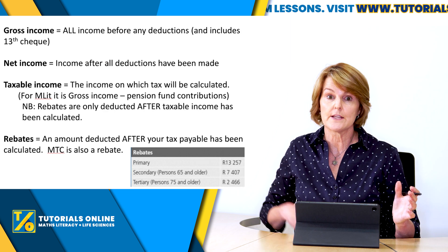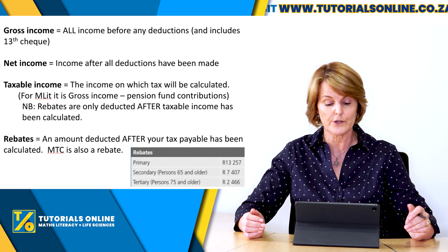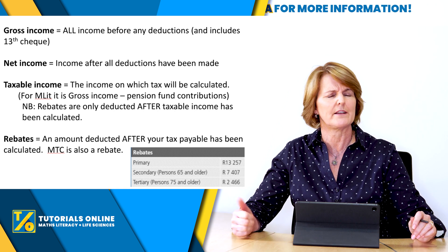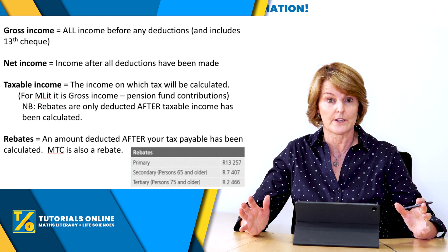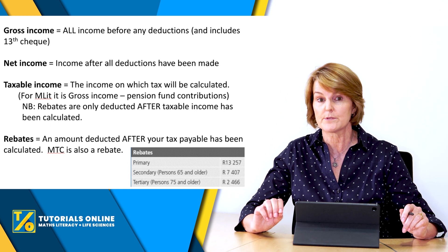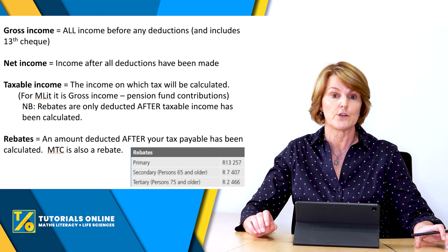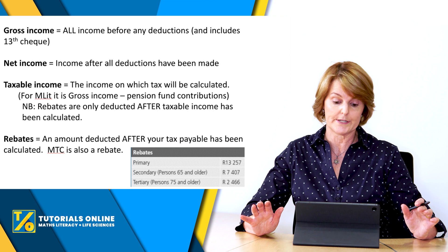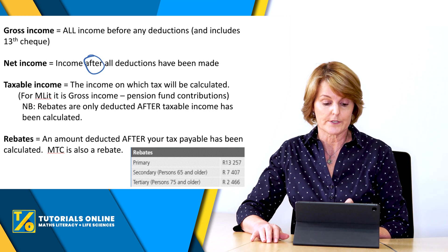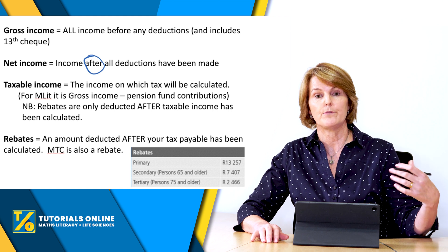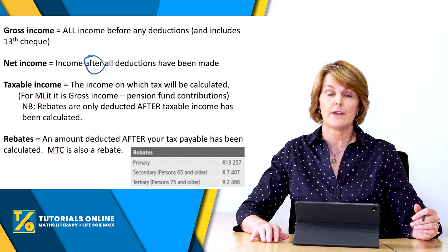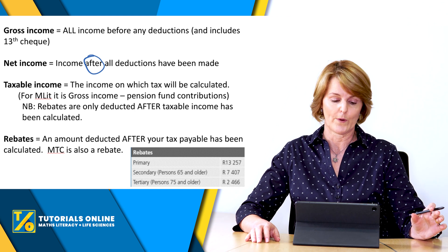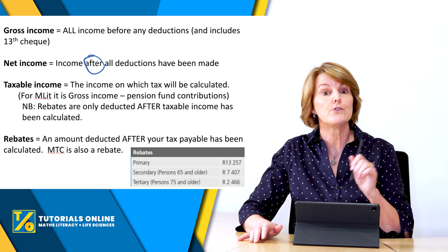You also have gross income and net income. Gross income is your total salary before any deductions are made — before you pay your medical aid, before you pay your tax, before you pay a pension. It can include your 13th cheque, so sometimes in questions they'll mention that and you'll work on 13 months for the whole year. Net income is your income after all your deductions — whatever you've got left in your bank account to spend on takeaways, clothes, or a holiday.